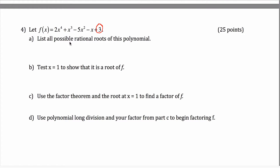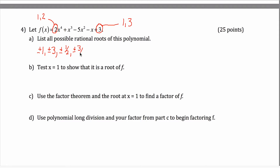To do that, you need the theorem: rational roots will always be of the form p over q, where p is a factor of the constant term. So I need the factors of 3, which are just 1 and 3. And q is a factor of the leading coefficient; since it's also prime, just 1 and 2 are the only possibilities. Taking each combination plus or minus: 1/1 gives ±1, 3/1 gives ±3, 1/2 gives ±1/2, and 3/2 gives ±3/2.